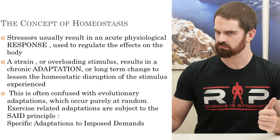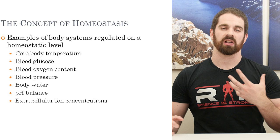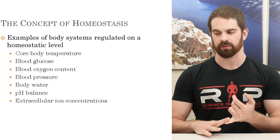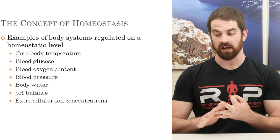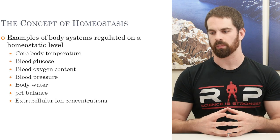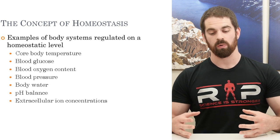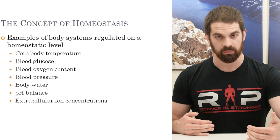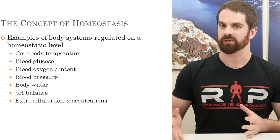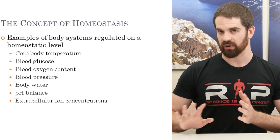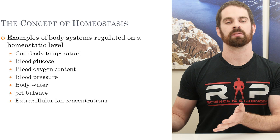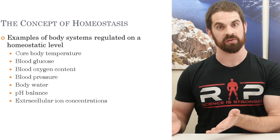There are a lot of different body systems that operate on homeostatic regulation. Just to list a few: core temperature is very tightly regulated, blood glucose is very tightly regulated, oxygen content, blood pressure, the amount of water you carry in your body, the pH balance of actual tissues and the blood — all very well regulated. Even things like extracellular ion concentrations, where we need to create concentration gradients across certain membranes, are very tightly regulated. All of these have a normal operating range and can get disrupted when we encounter stressors.